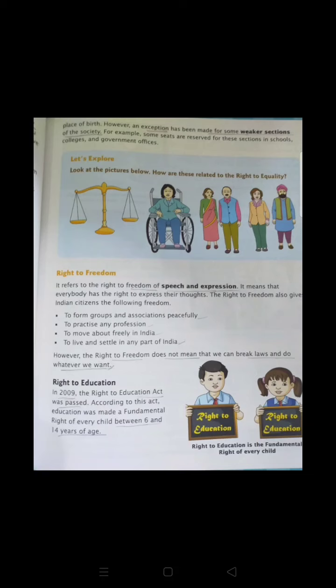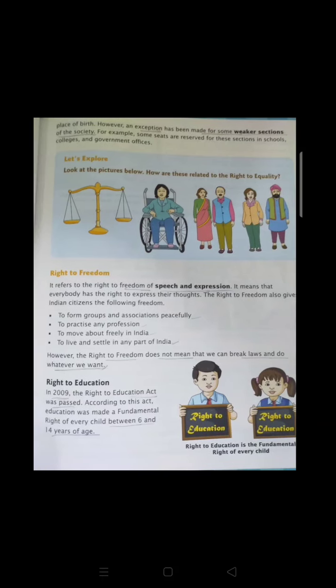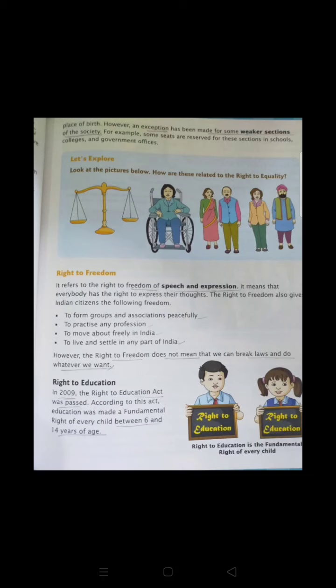Right to freedom also includes the right to education. Right to education means every child is free to take education. In 2009, a particular act was passed — the Right to Education Act 2009. Under this act, every child of the age group 6 to 14 years gets free and compulsory education in government schools, and no school has the authority to deny admission to that child, because it is the right of the child to take education from a particular institution.